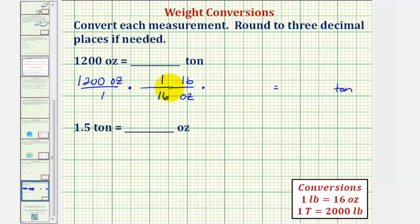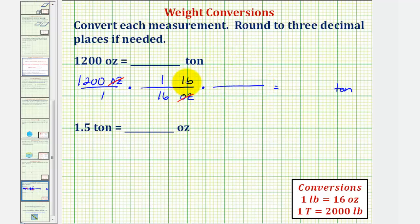Notice how this fraction is equal to 1 because these units are equal, but the units of ounces now simplify out. Therefore, if we found this product — which would end up being a quotient — it would give us the number of pounds in 1,200 ounces. But because our goal is to convert to tons, we'll now convert pounds to tons by multiplying by another unit fraction. We want pounds to simplify out, so we'll put pounds in the denominator and tons in the numerator. Our conversion is 1 ton equals 2,000 pounds. Notice how the units of pounds simplify out, leaving us with tons.